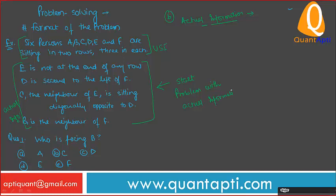While the useful secondary information should be kept in mind, you start from the actual information. For example, 'E is not at the end of any row' — you place E accordingly. But keep in mind the useful secondary information: that you have three spaces in a row, which is why you can place E in the middle.